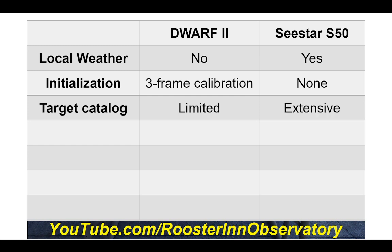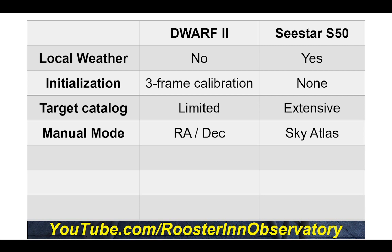The target catalog in the Dwarf 2 is very limited in the current public version of the app. The Sea Star has an extensive target catalog with a very pleasing interface. They differ in manual mode though: the Sea Star does not allow entering right ascension and declination, while the Dwarf 2 does. However, the Sea Star has a sky atlas that lets you surf the sky and click any point to go there.